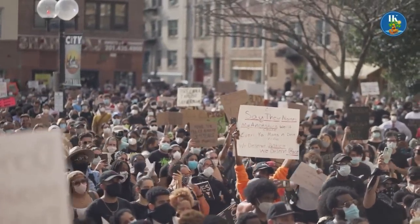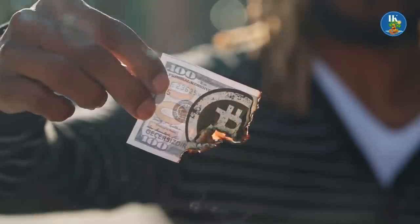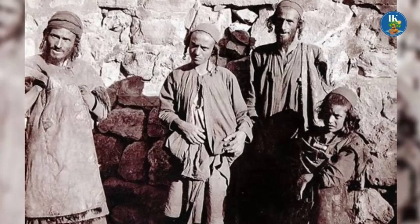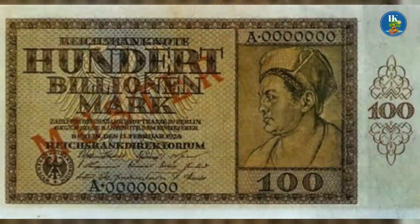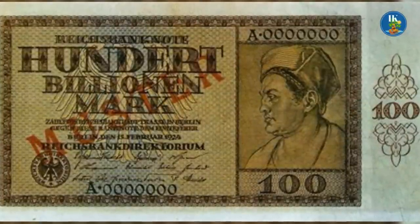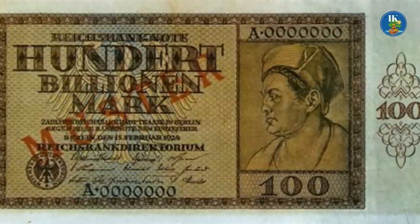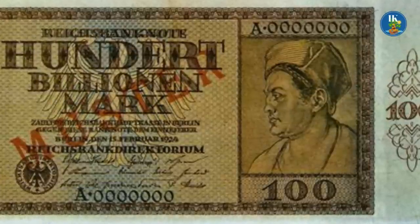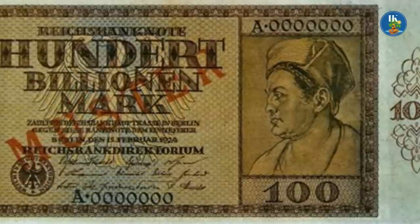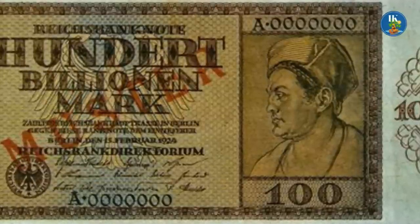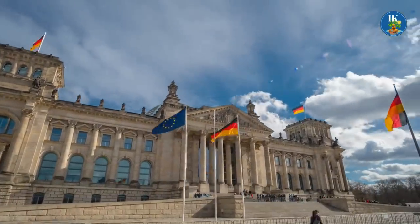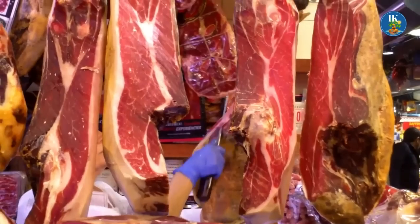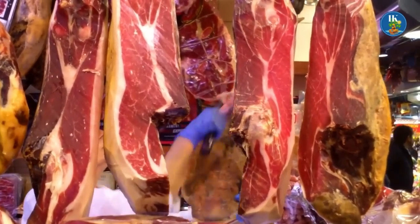German hyperinflation caused severe societal turmoil — the value of money plummeted to the point where the German mark was practically worthless. In 1914, the Papiermark was exchanged at 4.2 to the US dollar. By August 1923, one dollar was equivalent to one million Papiermark, and two months later, one dollar was worth 238 million Papiermark. By November 1923, a pound of bread cost 3 billion marks, a pound of beef cost 36 billion, and a glass of beer cost 4 billion.